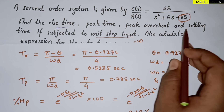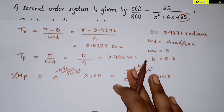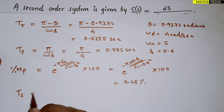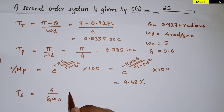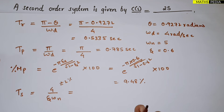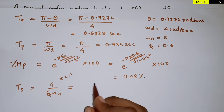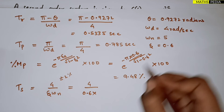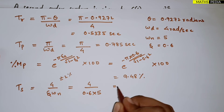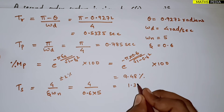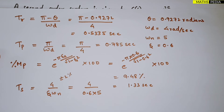We have calculated peak time, rise time, and peak overshoot. Next is settling time Ts. The formula is 4 / (ζωn) for ±2% tolerance. Substituting ζ = 0.6 and ωn = 5, we get Ts = 4 / (0.6 × 5) = 4 / 3 = 1.33 seconds.